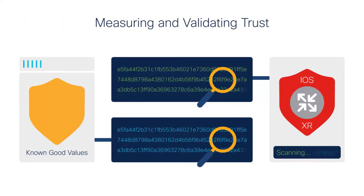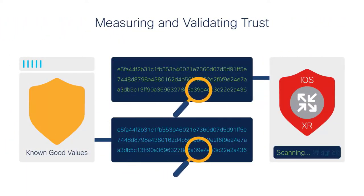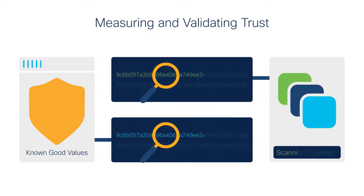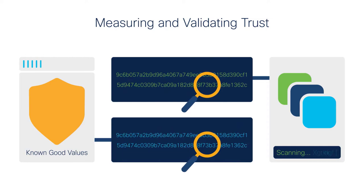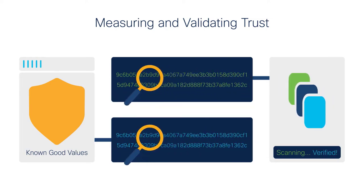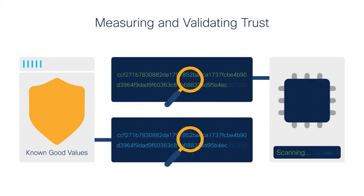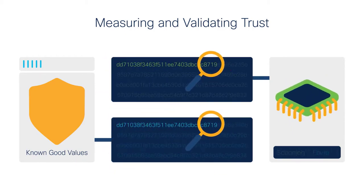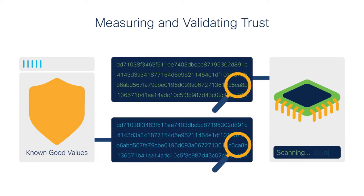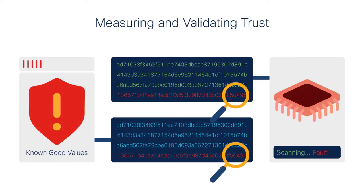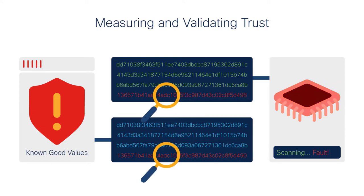Trust is focused on measuring and validating the integrity of the device. Once boot integrity is established, during runtime, whenever a binary is to be loaded, a measurement happens in the kernel and is verified against Cisco published known good values. When a mismatch is found, it indicates that the trust verification service cannot establish the trustworthiness of the device.